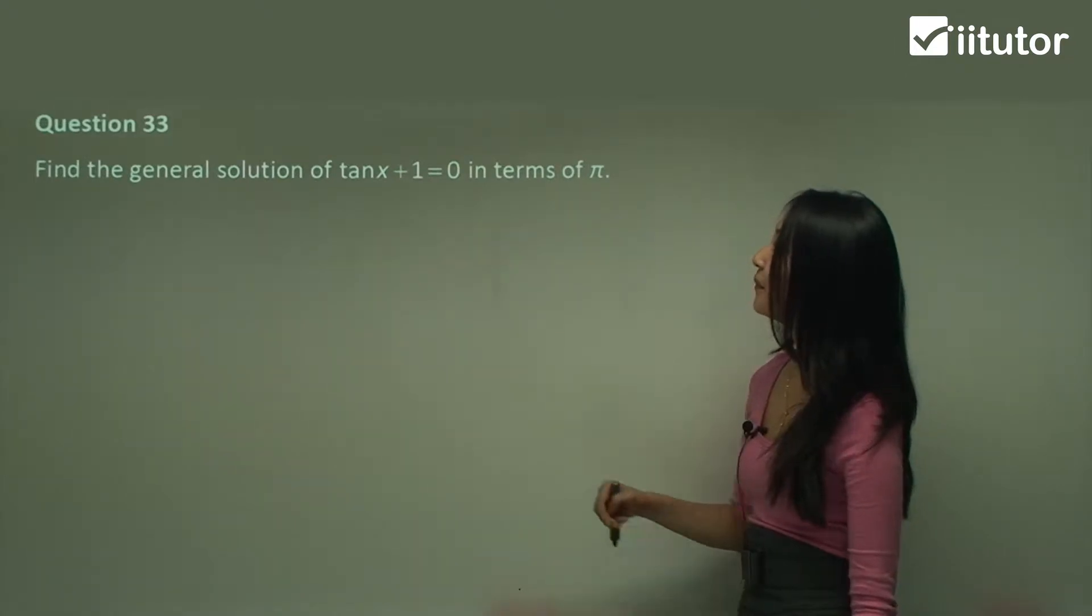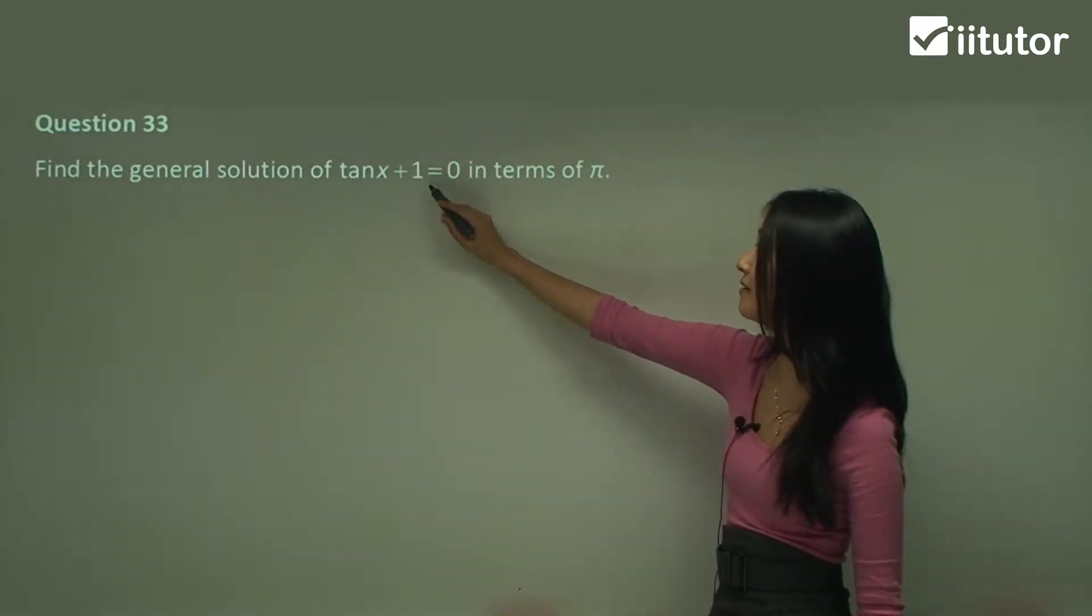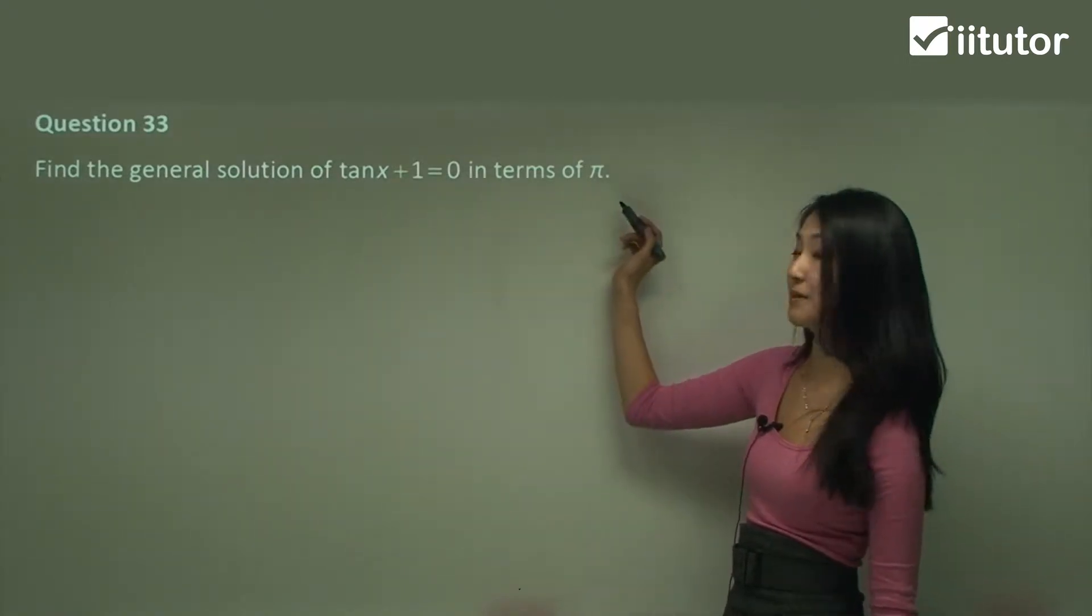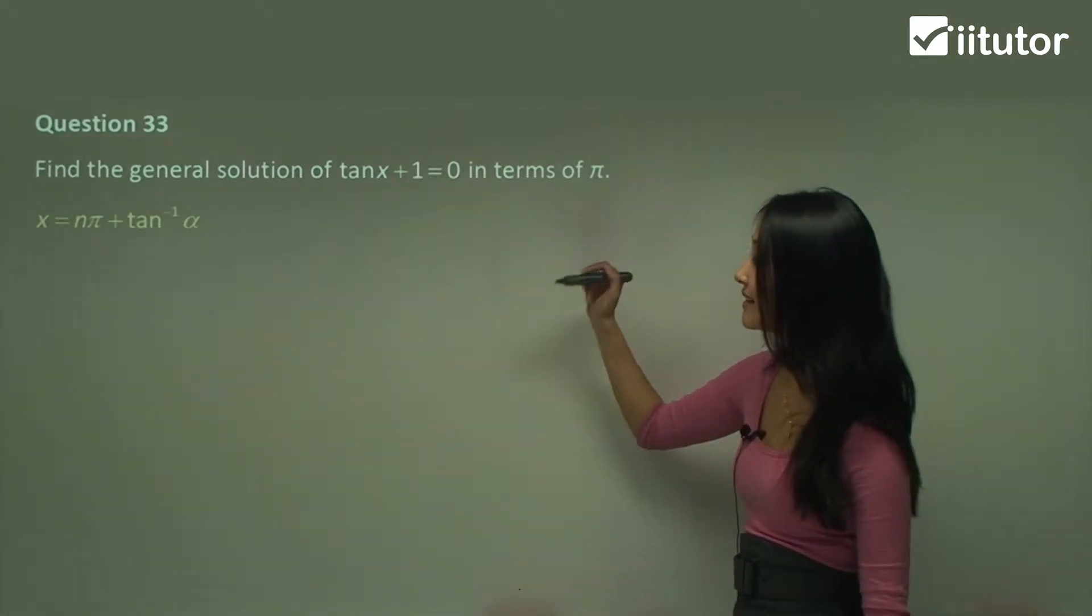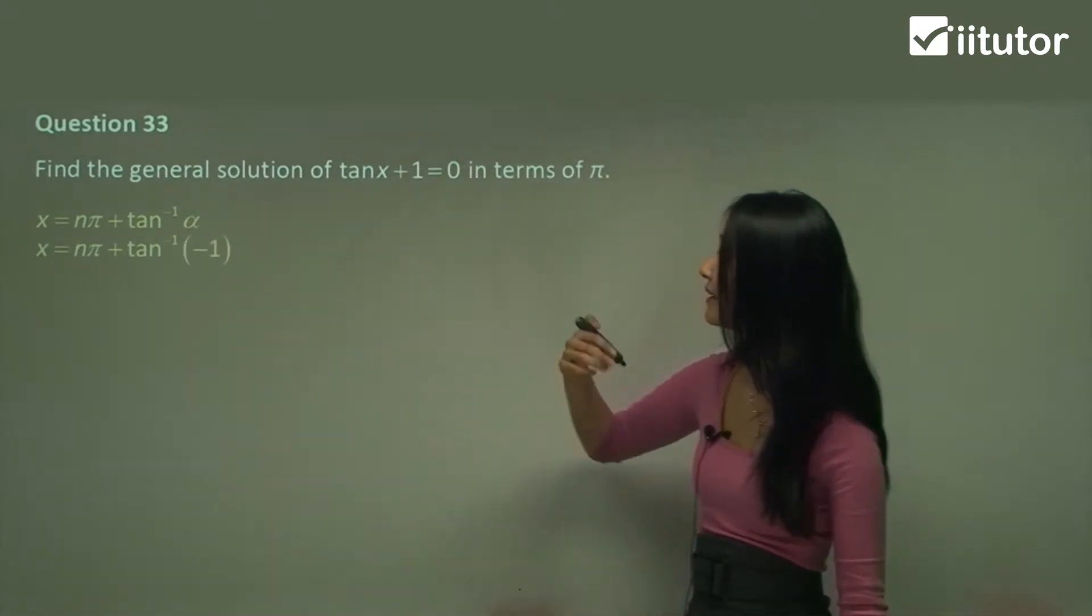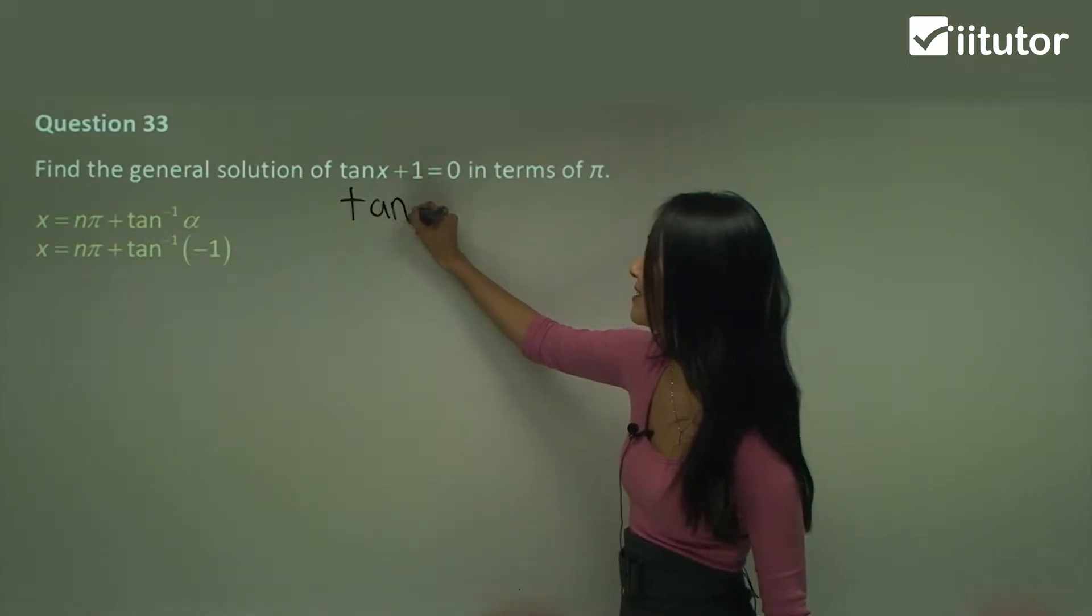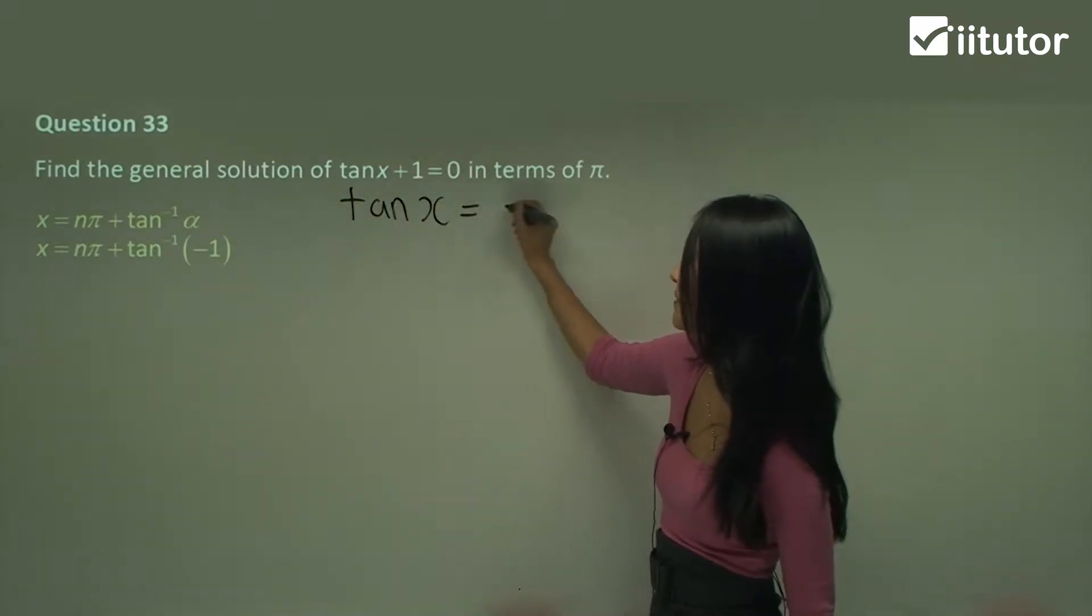In question 33, we want to find the general solution of tan x plus one equals zero in terms of pi. This is our general formula here. All we've done here is rearrange this. So tan x equals negative one.